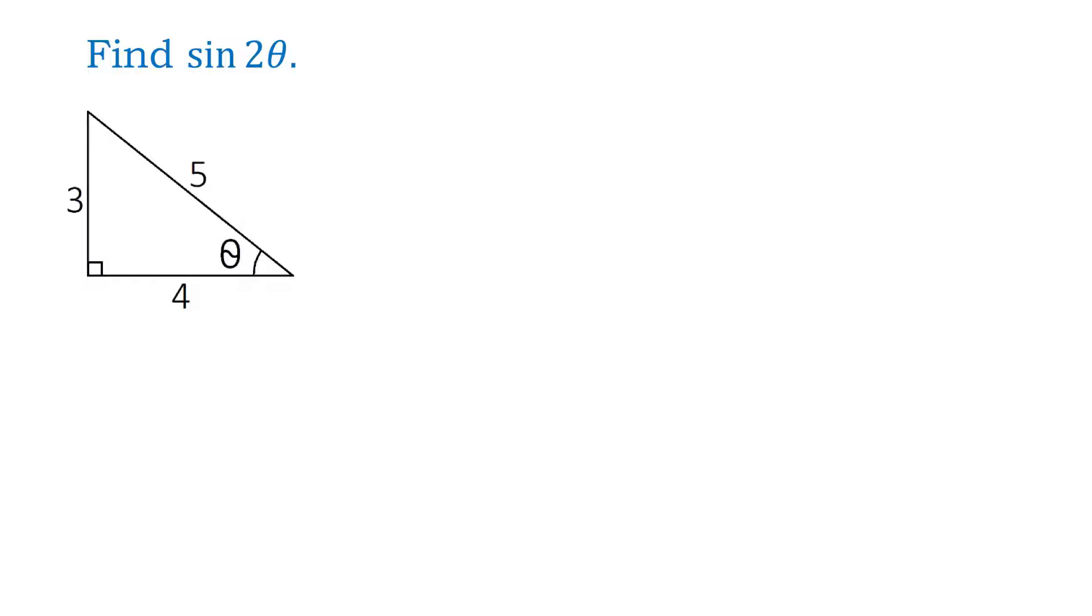Hello, how can we find sine of 2 theta given a right triangle with the sides of 3, 4 and 5 units with an acute angle theta?